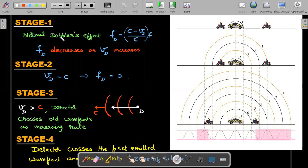So stage one, where the detector is still not yet as fast as sound, you would have a simple Doppler effect which is frequency detected equal to C minus VD by C into F. And as the value of VD increases, the value of the detected frequency starts reducing.